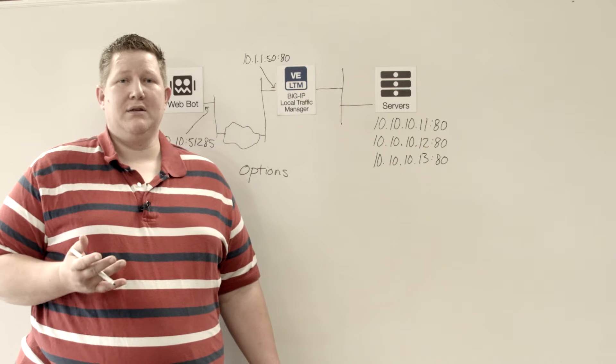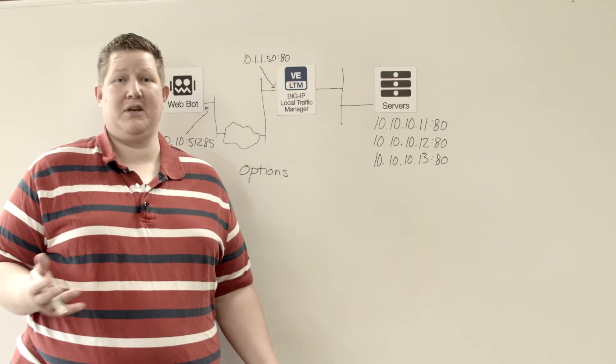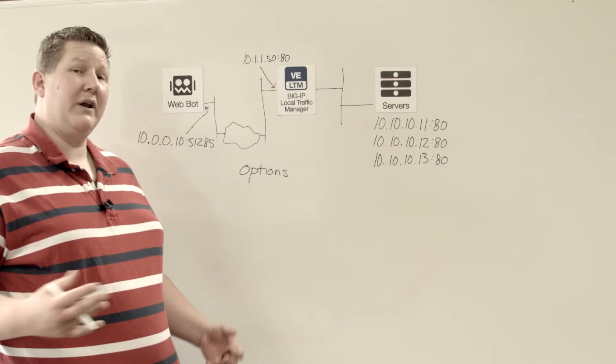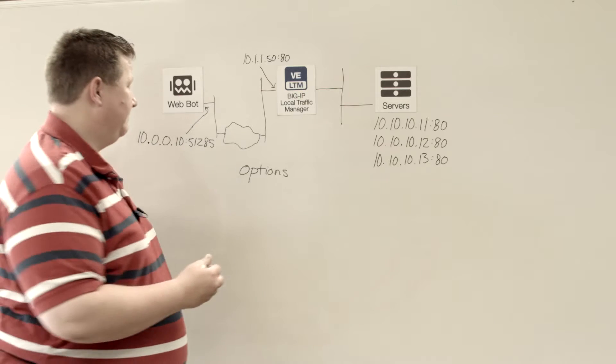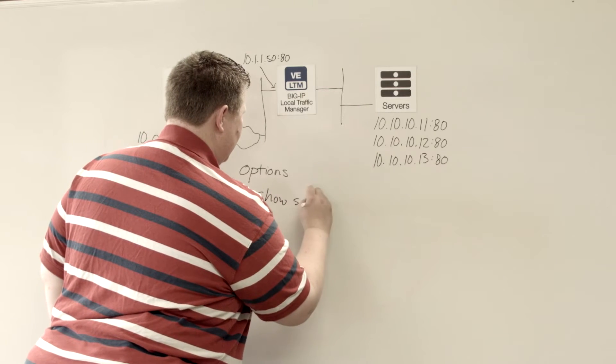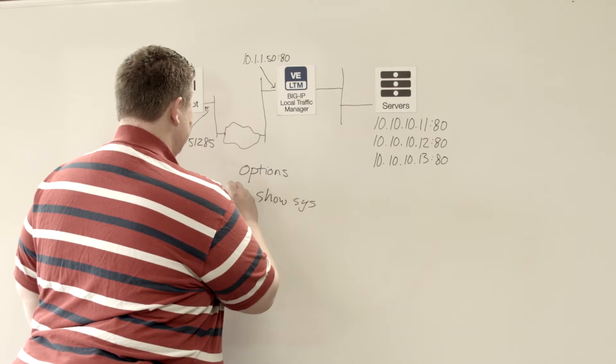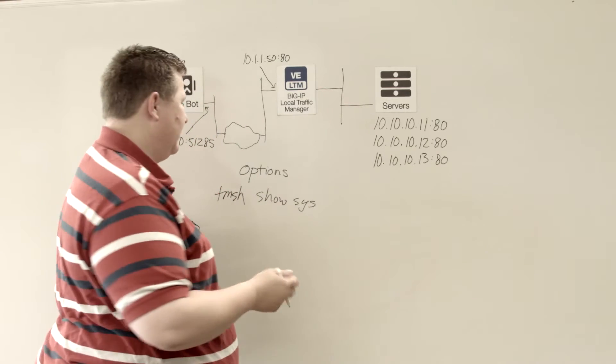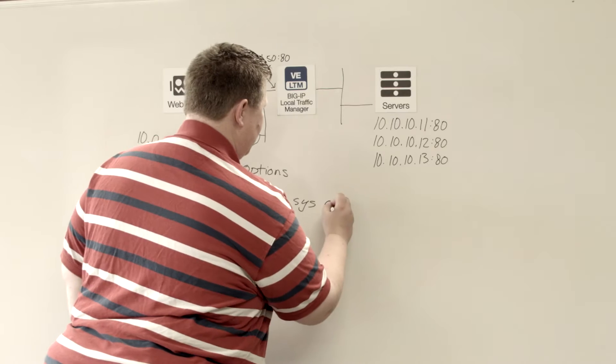So if you're going to do that from the command line, that is show sys, of course that's in tmsh, but if you're doing it from the bash shell, tmsh show sys connections.